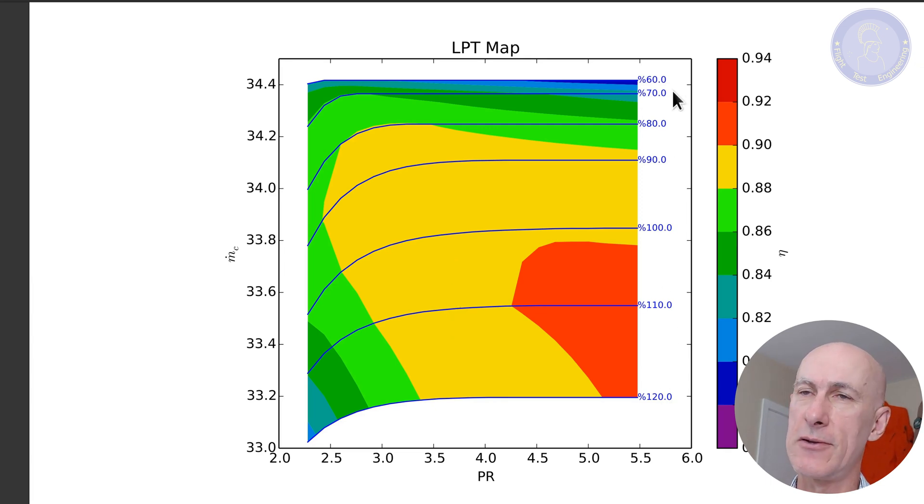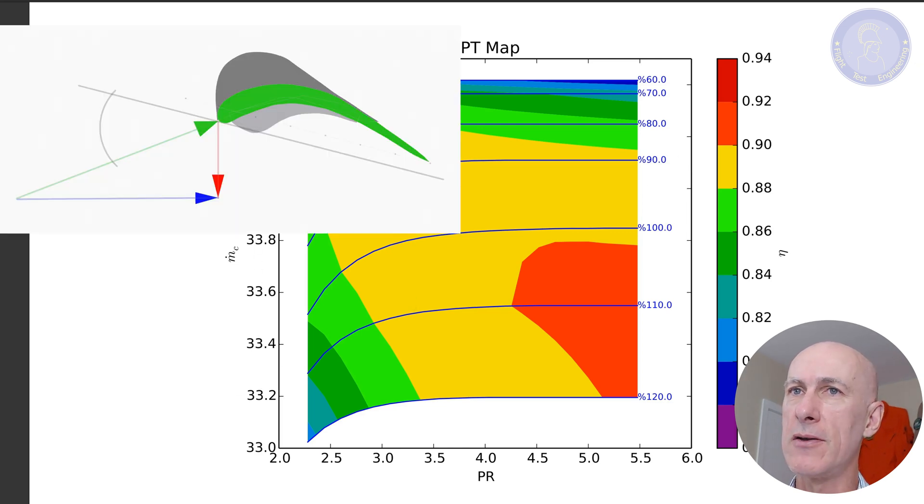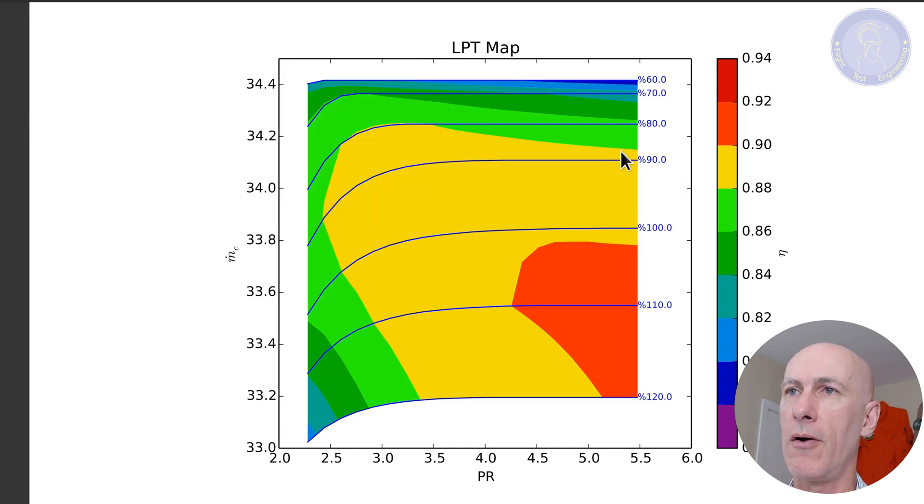An interesting point here is that as the turbine spins slower, the mass flow for the same pressure ratio increases. This is because as the turbine spins slower, the tangential velocity component on the final gas velocity decreases and there is more headroom for the axial velocity to increase up to the speed of sound and carry more mass with it.